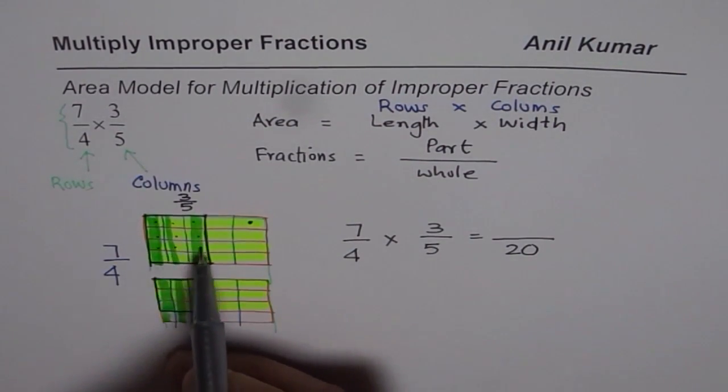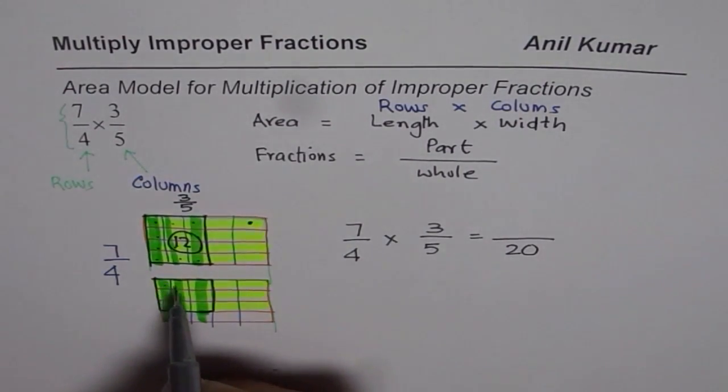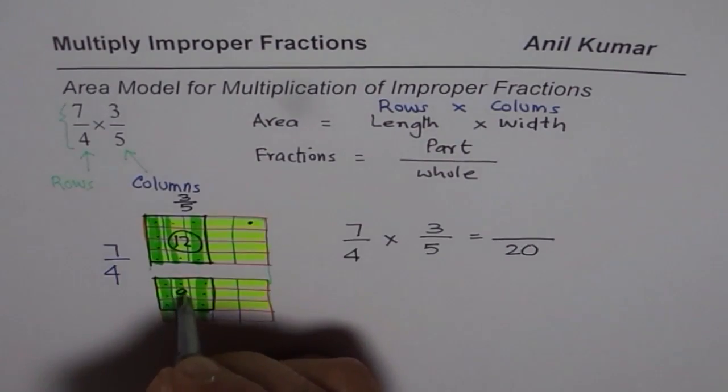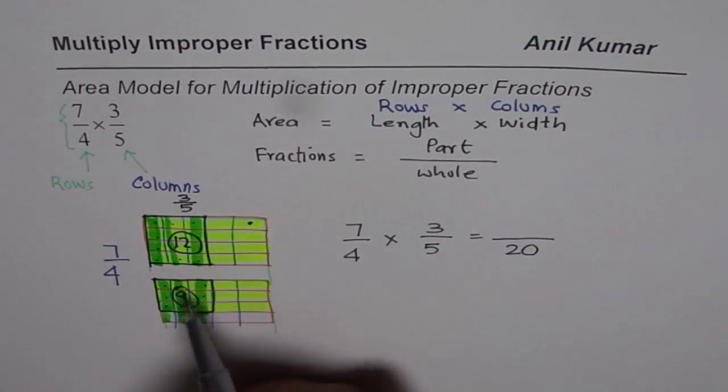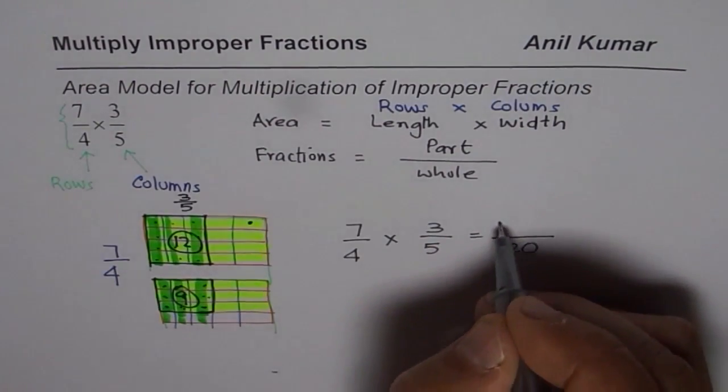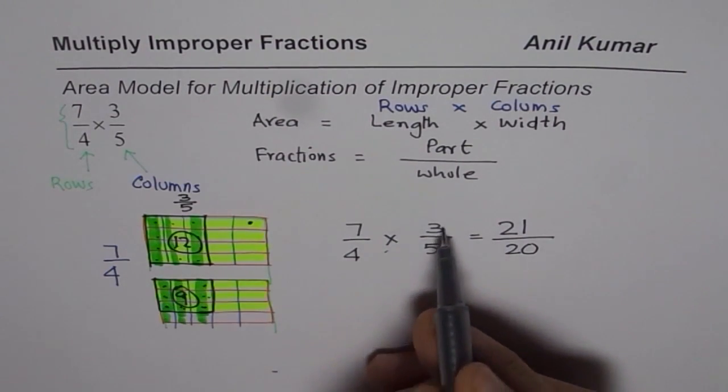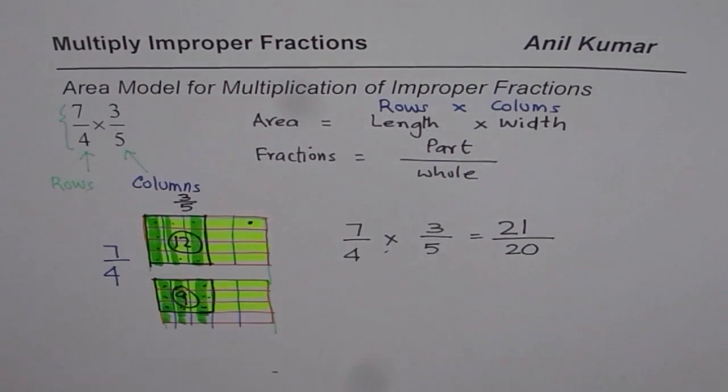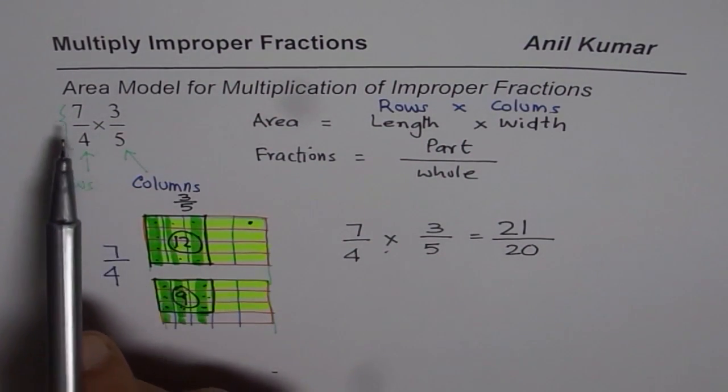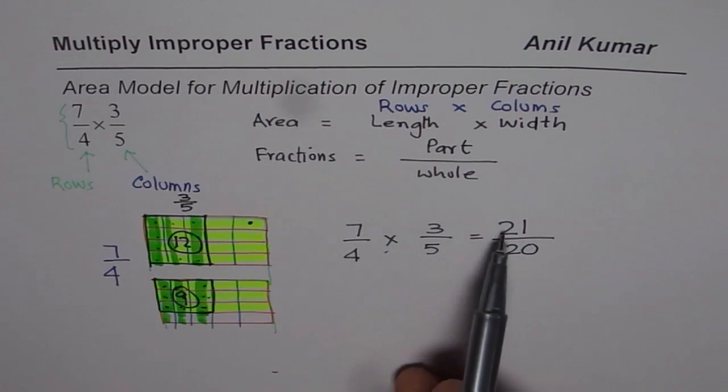1, 2, 3, 4, 5, 6, 7, 8, 9, 10, 11, 12 are here. And then continuing 13, 14, 15, 16, 17, 18, 19, 20, 21. So we get 21 here. So 7 over 4 times 3 over 5 equals to 21 over 20. So this represents the area model and to find the product also. So 7 over 4 times 3 over 5 is 21 over 20.